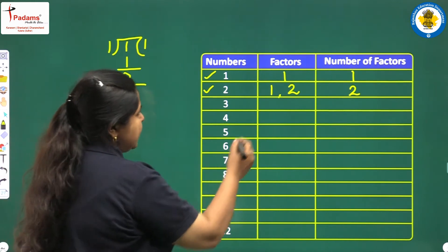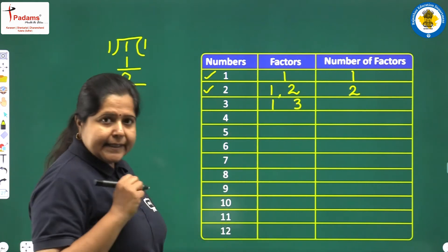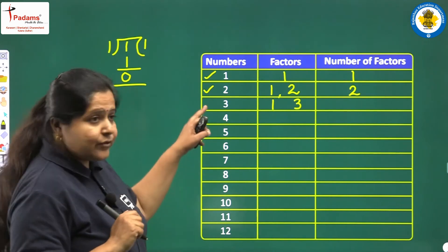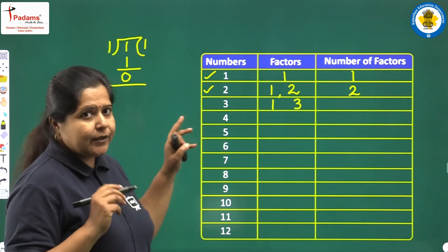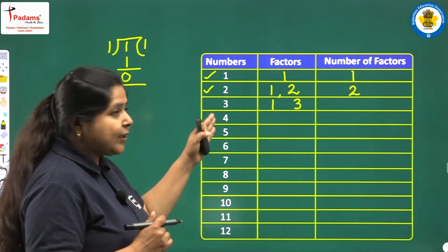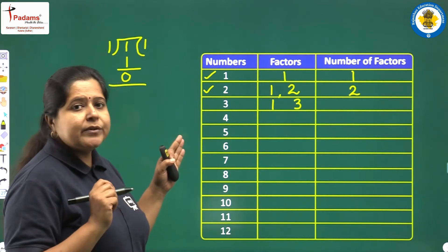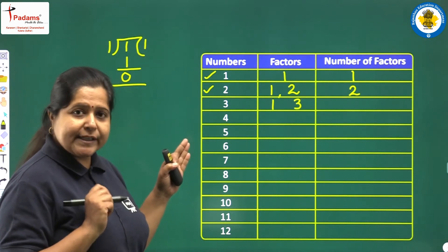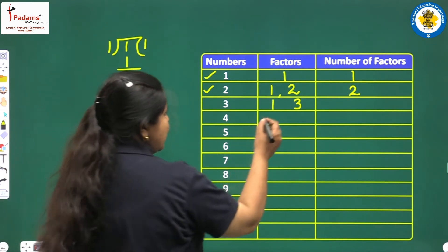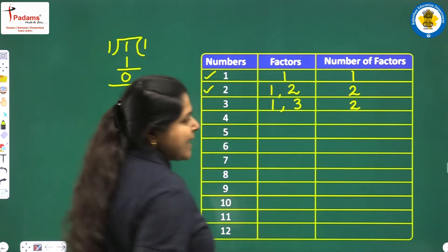Then we move on to 3. Clearly, 1 will be its factor and 3 will be a factor of itself. In between 1 and 3, we have the number 2. Will this 2 divide 3 completely? No, because 3 does not come in the table of 2. So 2 will not be a factor of 3, and it has only 2 factors: 1 and 3. So we write the number of factors as 2.